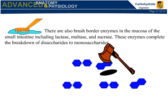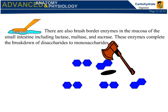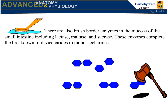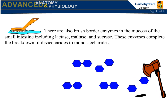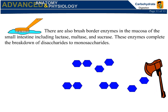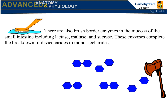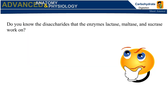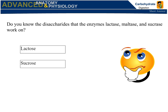There are also brush border enzymes in the mucosa of the small intestine, including lactase, maltase, and sucrase. These enzymes complete the breakdown of disaccharides to monosaccharides. The disaccharides that lactase, maltase, and sucrase work on are lactose, sucrose, and maltose.